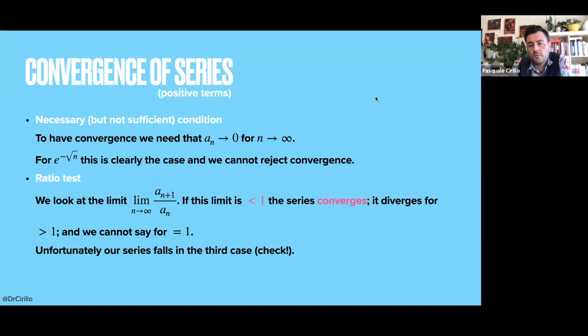And to test convergence, there is a battery, a very long battery of tests. We consider just a few of them, but there are many. The first one, which is also typically the simplest one, if it works you can stop immediately, is the ratio test.